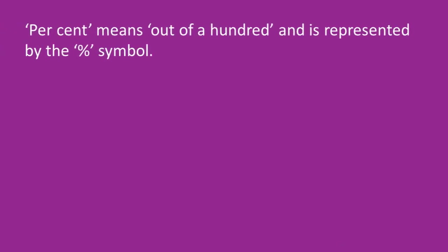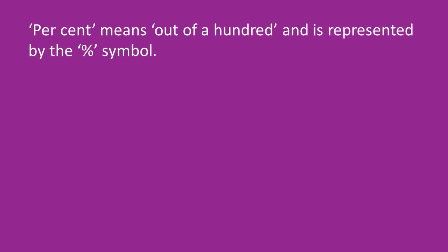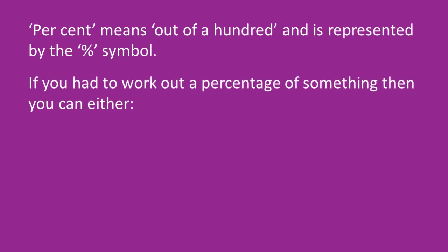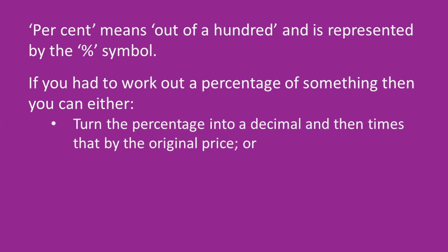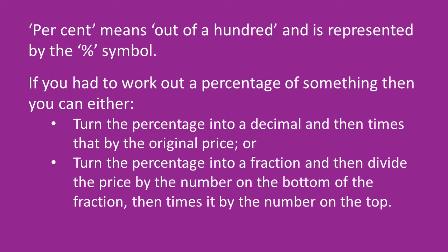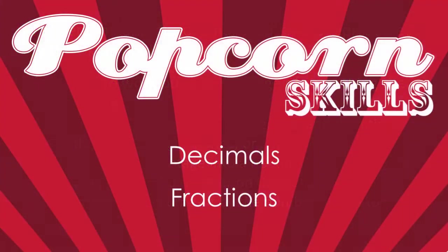So let's recap. Percent means out of a hundred and it's represented by this symbol. If you want to work out a percentage of something such as a price, you can either turn the percentage into a decimal and then multiply that by the original price, or turn the percentage into a fraction and divide the price by the bottom number of the fraction and then multiply by the number on the top. For more on this, check out the Popcorn Skills videos on decimals and fractions.